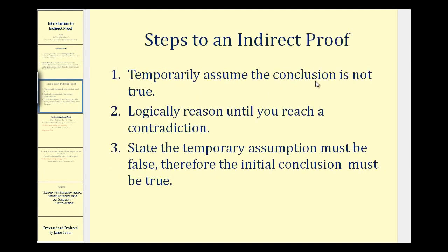Here are the steps to an indirect proof. Step one, we temporarily assume the conclusion is not true and then we logically reason until we reach a contradiction. Then we finish by saying that the temporary assumption must be false, therefore the initial conclusion must be true.